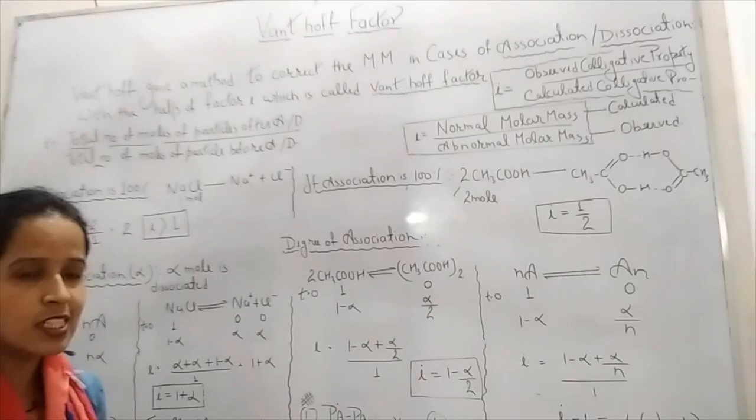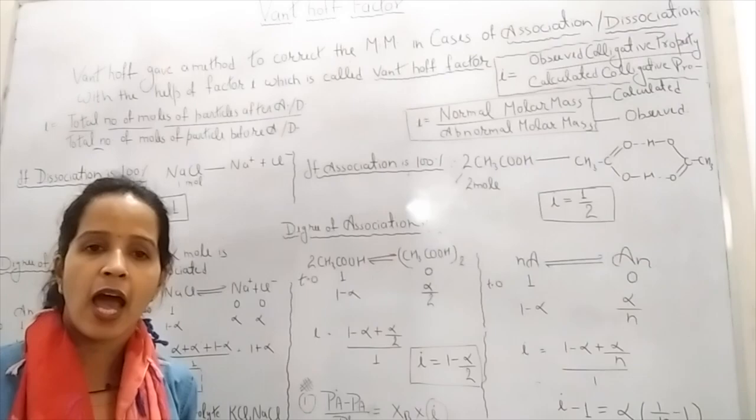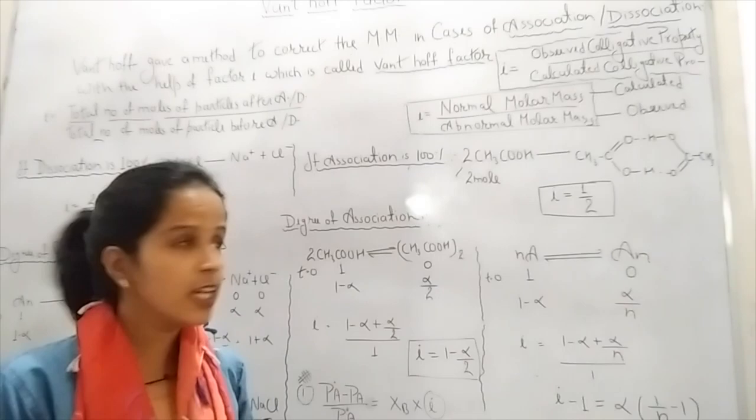So today, to overcome this problem, Van't Hoff was the scientist who gave a method to correct the molar mass in case of association and dissociation with the help of 'i', which is known as the Van't Hoff factor.